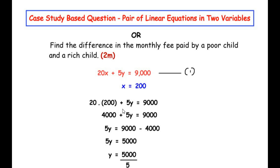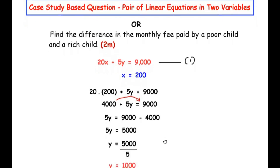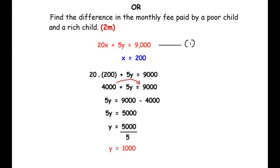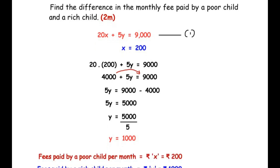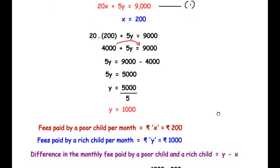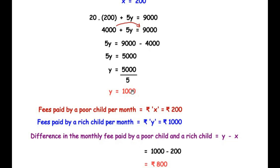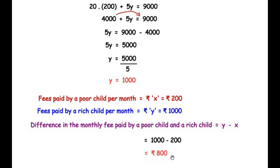Substituting x = 200 into equation 1: 20 × 200 + 5y = 9,000, which gives 4,000 + 5y = 9,000. Taking 4,000 to the other side: 5y = 5,000, so y = 1,000. The fees paid by each rich child per month is rupees 1,000. The difference in the monthly fee paid by a poor child and a rich child is y − x = 1,000 − 200 = rupees 800.